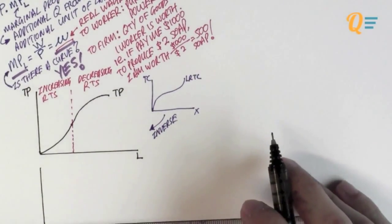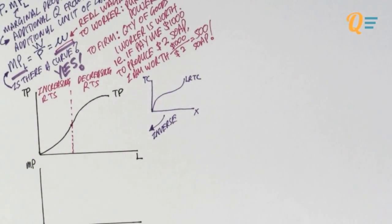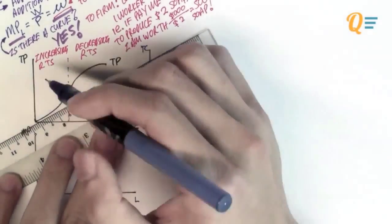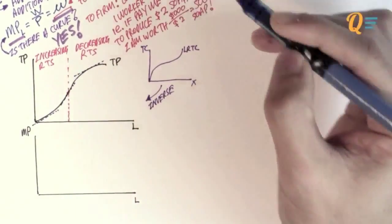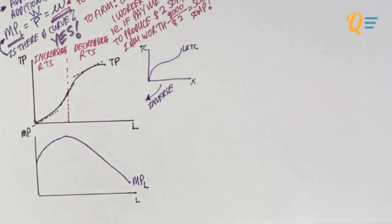How are we going to derive our marginal product of labour? Well, I think you should be pretty good at this already. We know that to derive anything marginal, you basically take the tangents of the graph, and then you're going to measure the gradient of it. You'll notice that it's going to be a curve that looks like this.